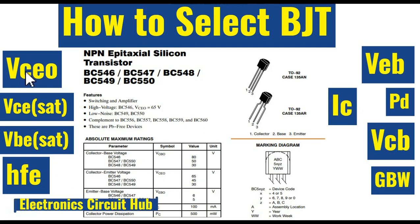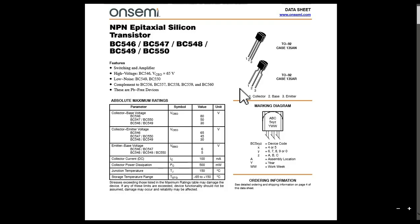To quickly recap, the parameters to look at are: VCEO, VCE sat, VBE sat, HFE, VEB, IC, PD, and VCB.